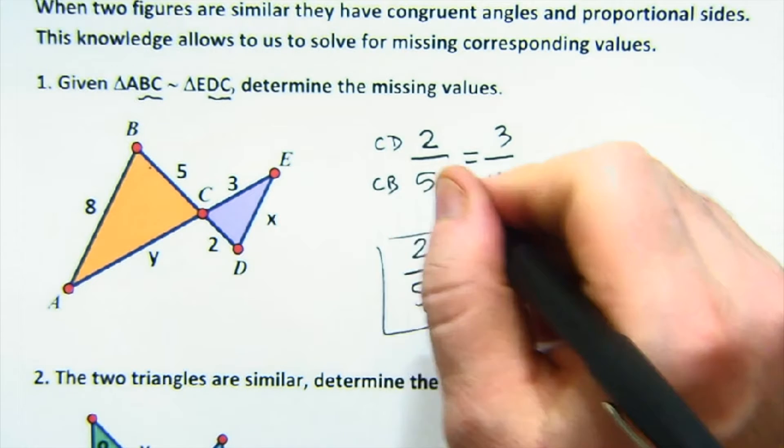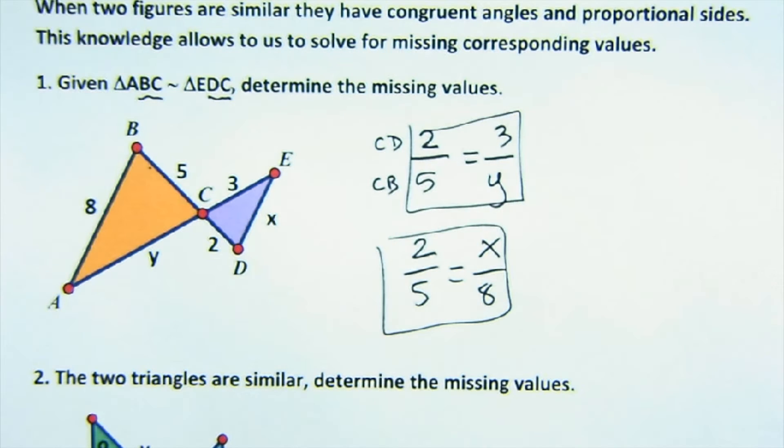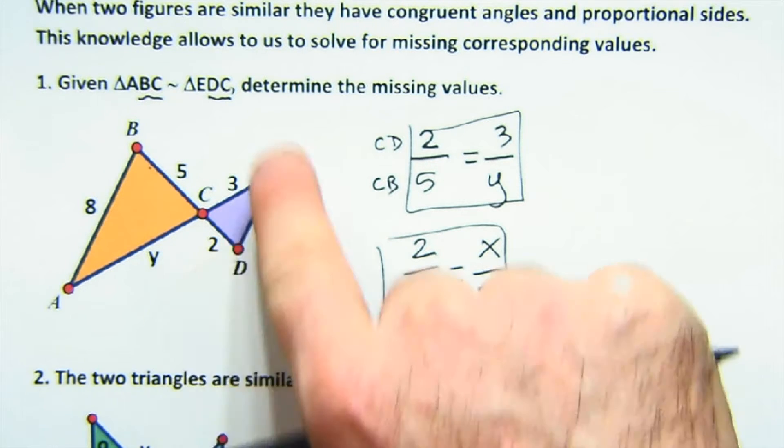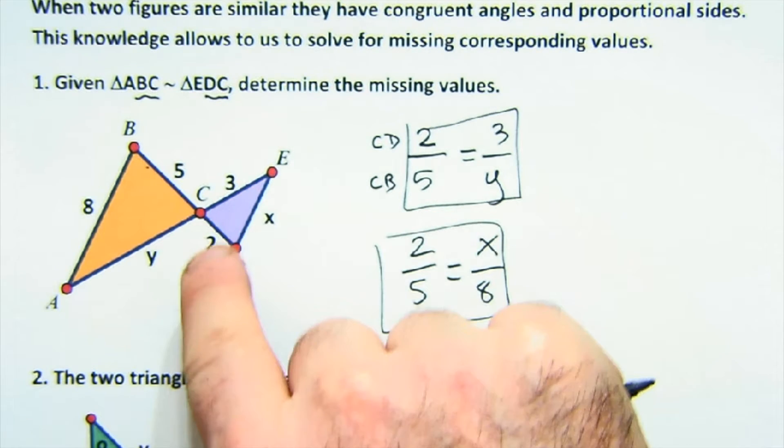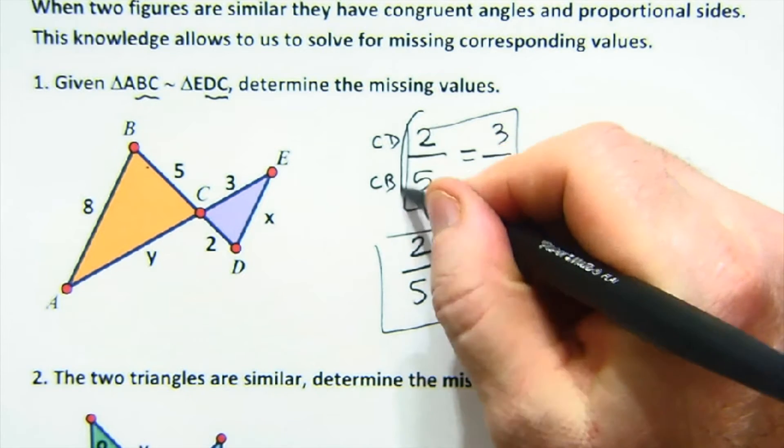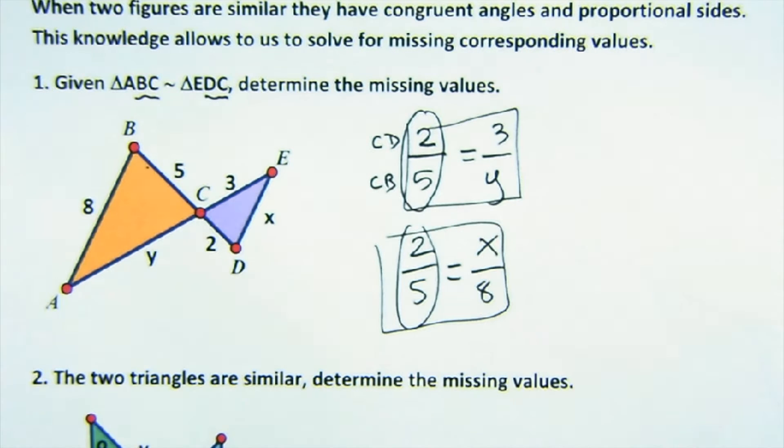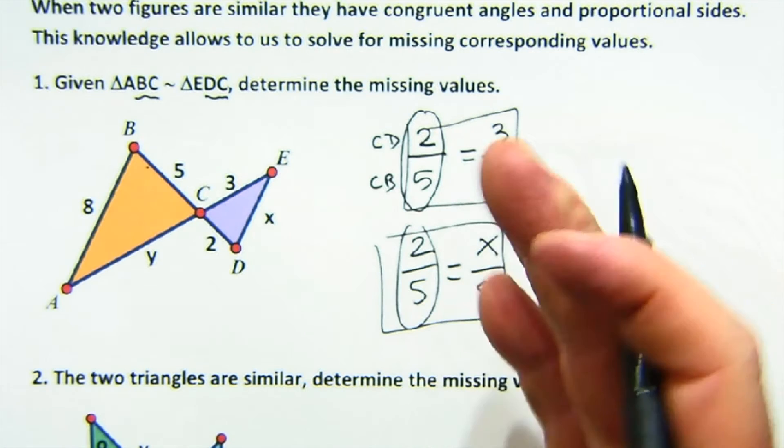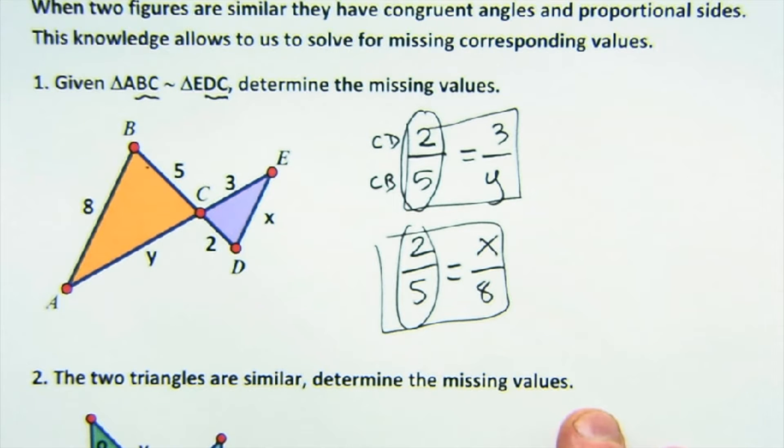So you just set up the proportions, and then solve. Can you see how I was able to do that? I found out using my similarity statement, two to five, three to y, two to five, x to eight. The two to the five is the very important one to find because that's your scale factor between the shapes, and then you just cross multiply and solve for x and for y.